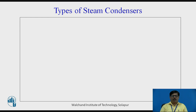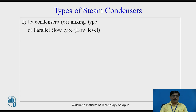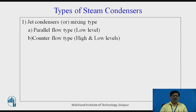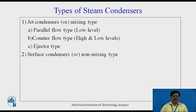Now let us see what are the different types of steam condensers. Broadly, the steam condensers are classified into two categories. First is Jet Condensers, which are also called as Mixing Type of Condensers. These are further classified into Parallel Flow Type Low Level Jet Condenser, Counter Flow Type Low Level Jet Condenser, Counter Flow Type High Level Jet Condenser, and Ejector Type of Jet Condenser. In the second category, we have Surface Condensers, which are called as Non-Mixing Type of Condenser.